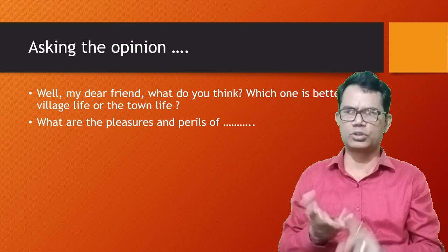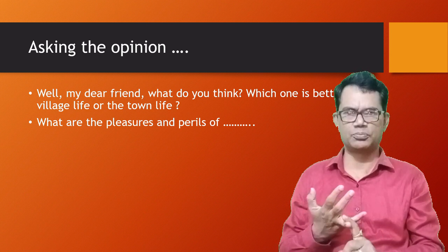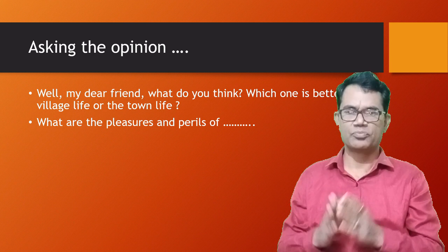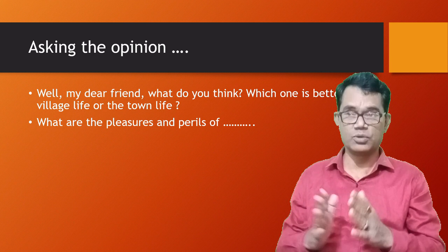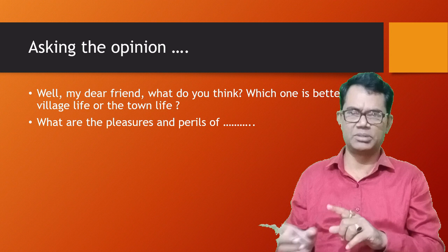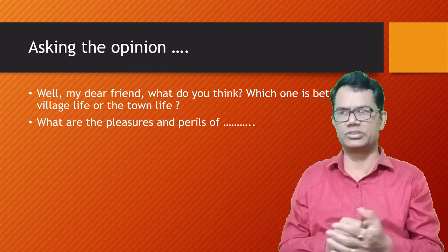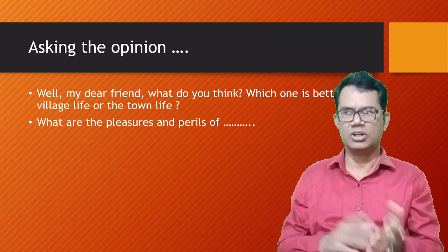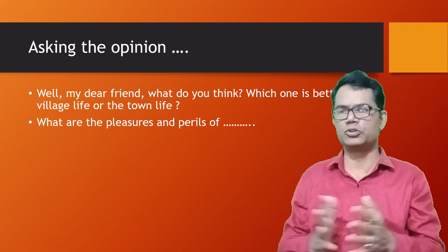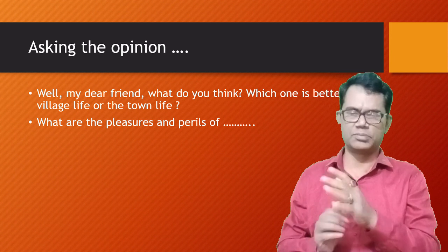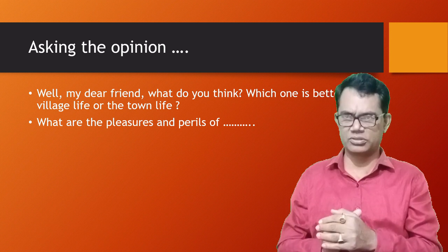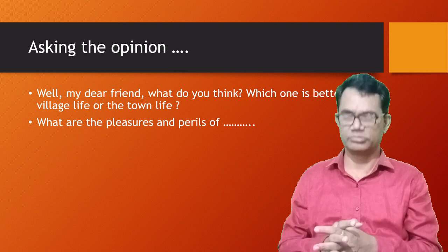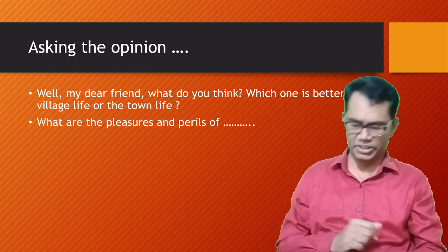Pleasures and perils — pleasures equals merits, perils equals demerits. So you can ask: 'What are the merits and demerits of the village life?' In place of merits and demerits, we can use pleasures and perils. This is a beautiful way of asking somebody's opinion.